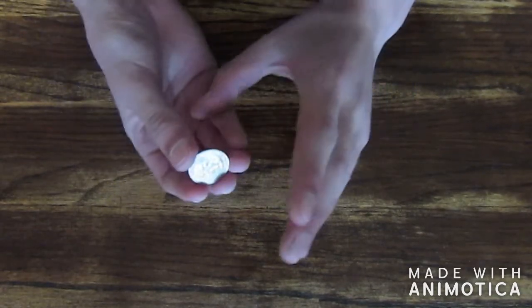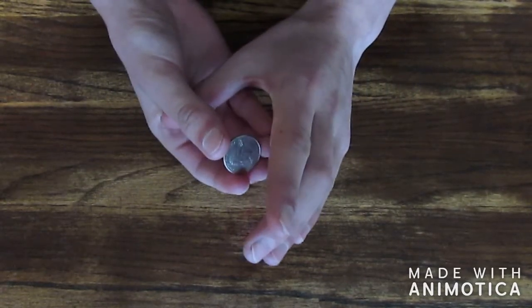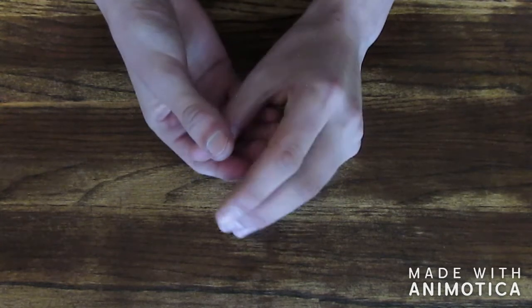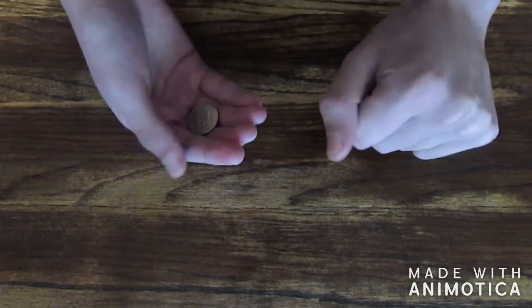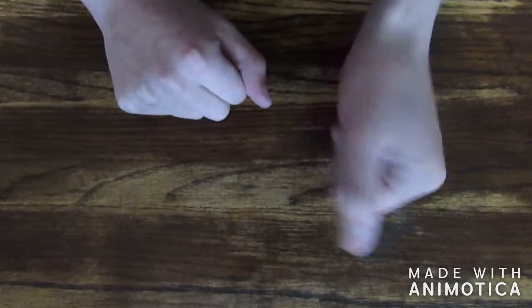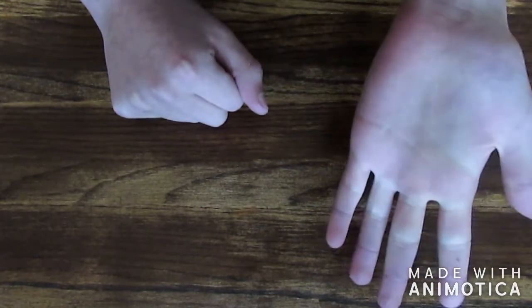So basically you come over here and your thumb just literally lets go and it drops as you're coming over here. You make a fist like you grabbed it, and then just do whatever you want to make it disappear.